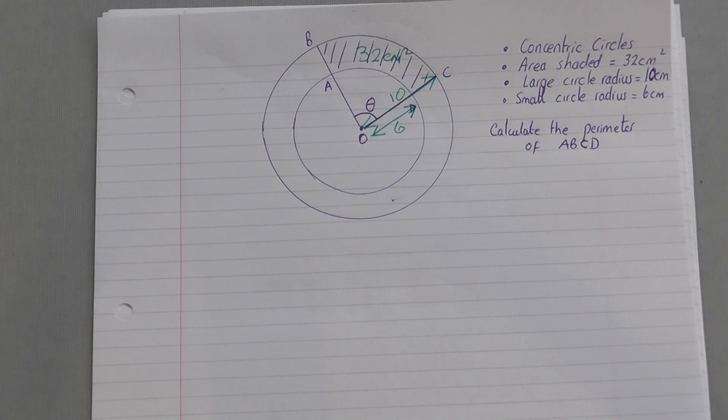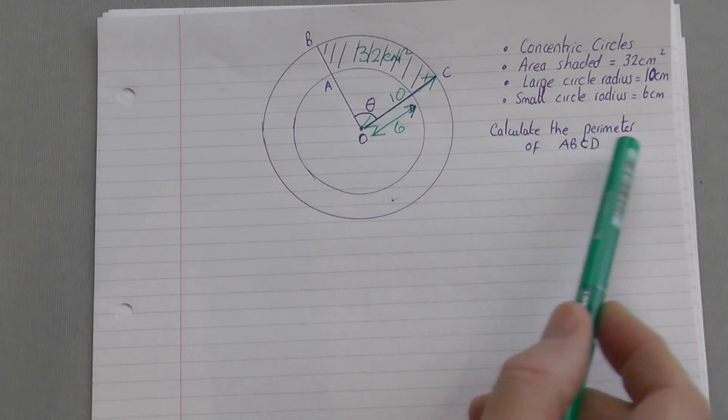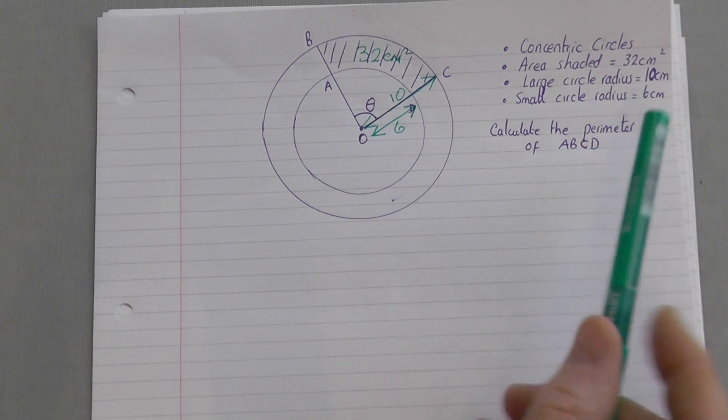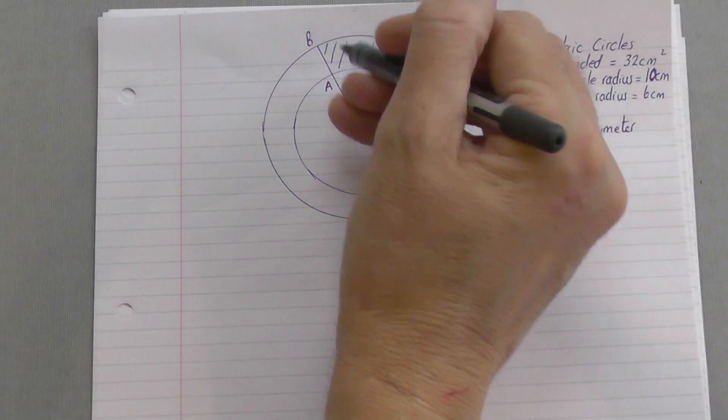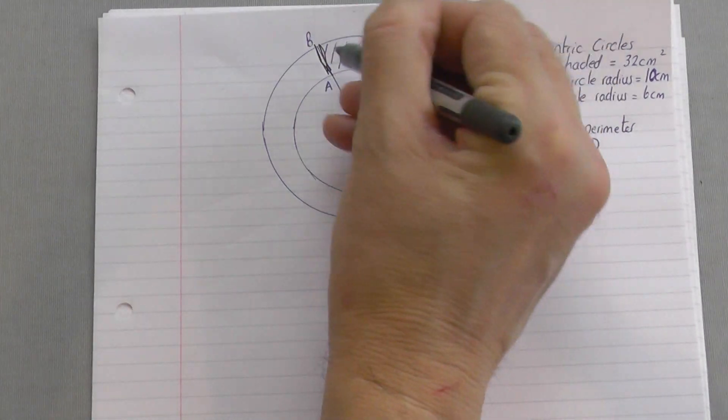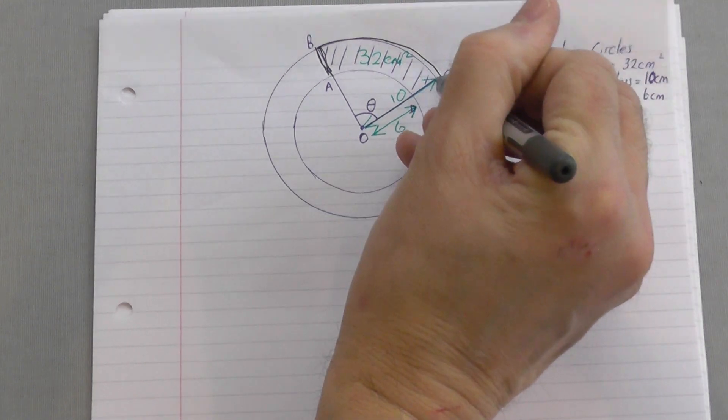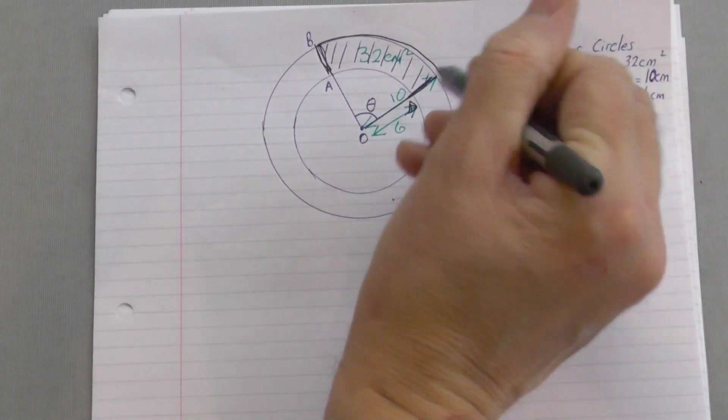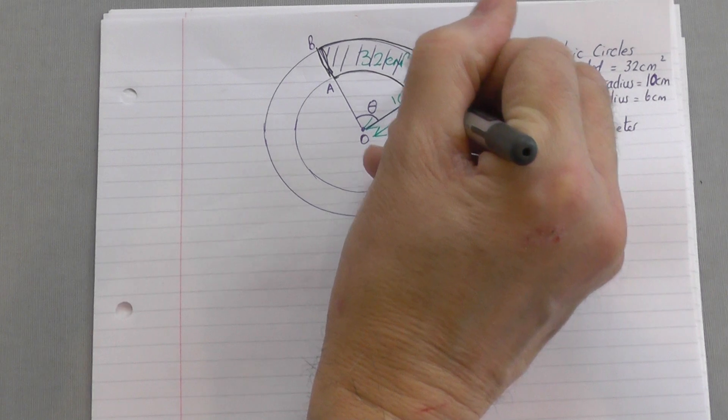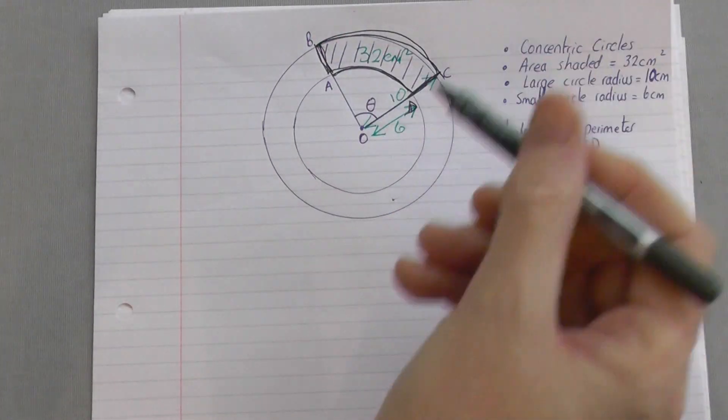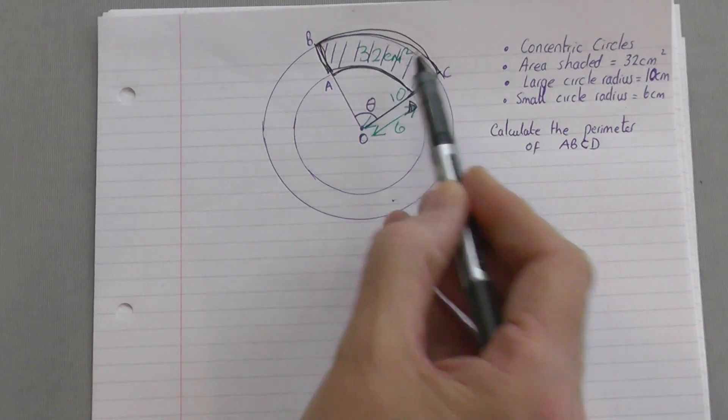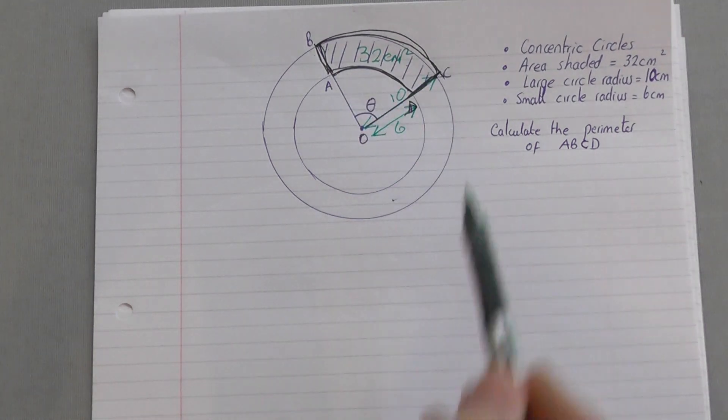Now based on all that information you're asked to work out the perimeter of the shape ABCD. If I just go over this shape here, from A to B to C to D, this is the shape I'm going over. And that's the shape which actually has the area of 32. And you need to work out the perimeter of that shape.